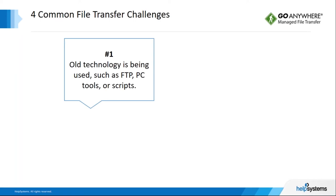Let's start by talking about some of the challenges we face today when trying to share information between employees, trading partners, and customers — basically how we're transferring files. Even though proper tools have been out there for quite a while, a lot of IT departments are still using old technologies such as FTP, legacy scripts, and PC tools — either rogue installs by employees or decisions made by staff because of the free price tag. A lot of times the older technology is a one-function type tool, and we end up using more than one tool to handle the different protocols required by trading partners and customers. This can lead to a hodgepodge, decentralized solution making management almost impossible.